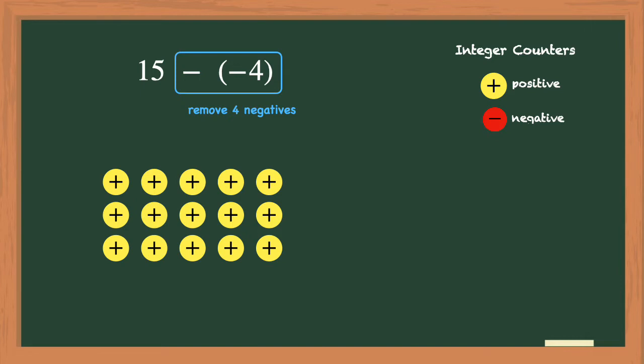Remember, a zero pair is one positive counter paired with one negative counter. Here is the first zero pair, so I need 3 more zero pairs. With these additional zero pairs, now I have 4 negative counters that I can remove. So let's remove them.